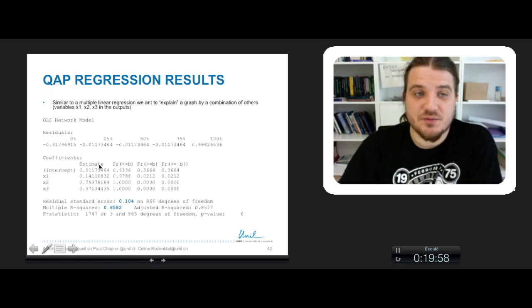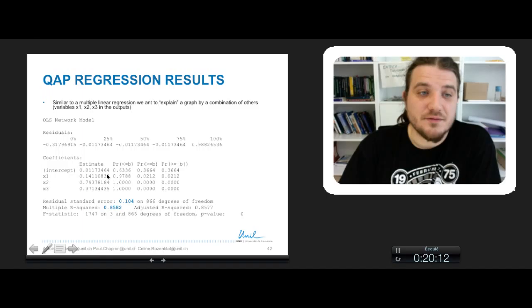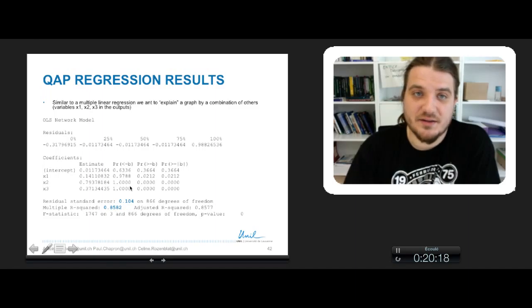When you try to estimate a network with three networks like in the previous example, you have four lines of results, one for each variable x1, x2, x3, and one for a constant term called intercept. You've got the estimated value, the value of your model here, and you have the p-value here that helps us to reject the influence or the confidence we have in the influence of a variable.